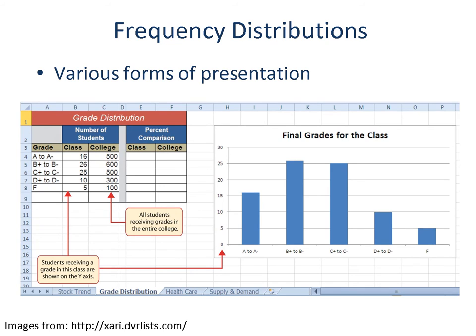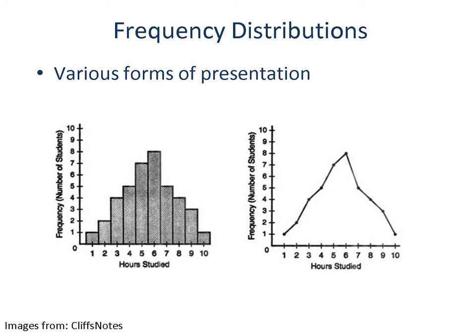Another useful way to report frequency distributions is through graphical displays. Bar graphs are often used to display frequency distributions, showing count on the y-axis and each category on the x-axis. Frequency histograms are essentially bar graphs, but the categories are ordered and the space between bars is removed. Frequency polygons use connected points rather than bars to show frequency of occurrence. The data displayed in both histogram and polygon formats can be the same.